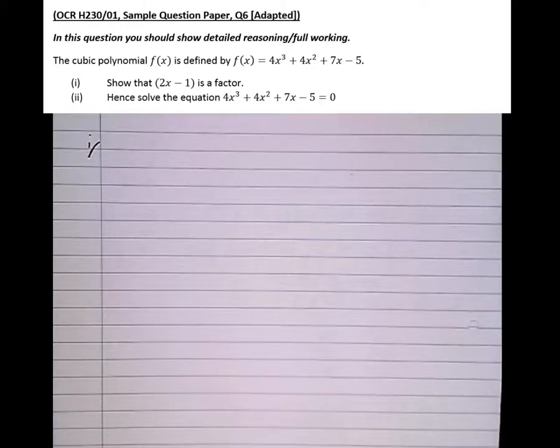So let's have a look at the question. So it says the cubic polynomial f of x is defined by f of x equals 4x cubed plus 4x squared plus 7x take 5. Show that 2x minus 1 is a factor. So what we're going to do, we're going to use the factor theorem to show that it's a factor. It's not necessary to use the full polynomial division algorithm. The factor theorem is a much quicker way.